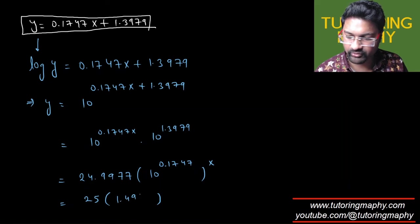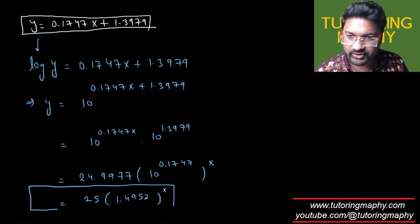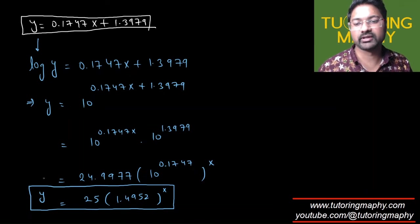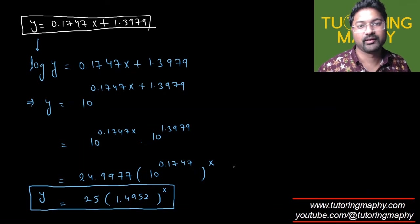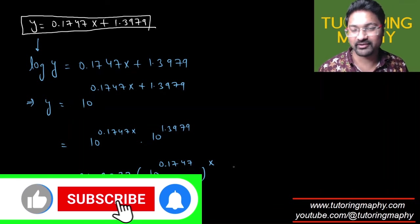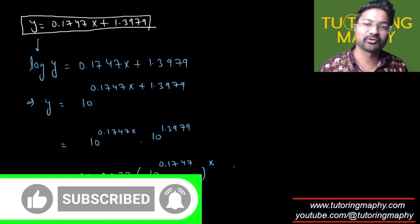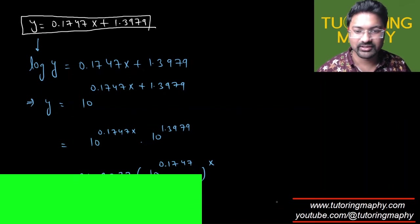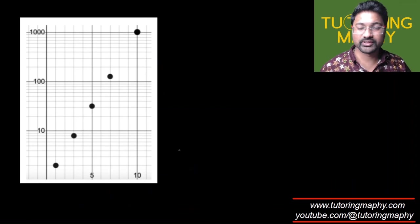So that's going to look like about 25 and 10 raised to 0.1747 looks like 1.5, 1.5, about 1.5, or up to 4 decimal places that's going to look like 1.4952 raised to x. So this is the original function which we actually synthesized from the semi-log plot. So I hope this makes sense and this clears up all the confusion, if at all you would be having about the semi-log. If you have any questions, please post that in the comment section.